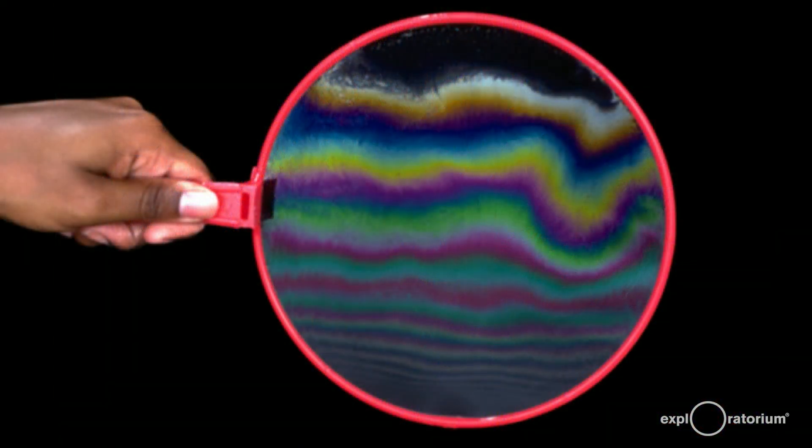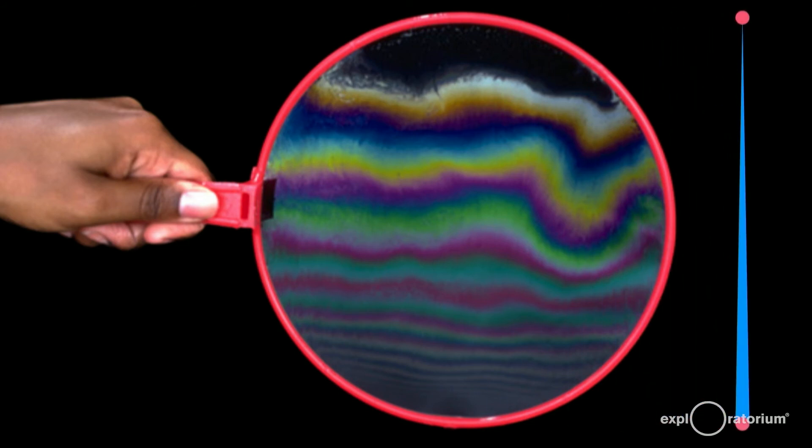It's easier to see if we have a simple bubble hoop. The colors in a bubble are created by light interference. Different colors are canceled or subtracted from the reflected light depending on the thickness of the soap film.